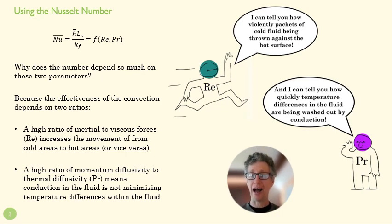So if we have violent convection and we have big temperature differences within the fluid, then we're going to have a high Nusselt number. Convection is going to be effective.